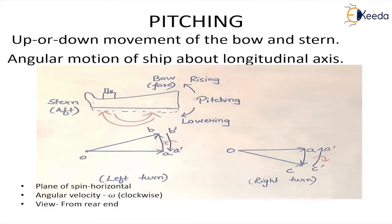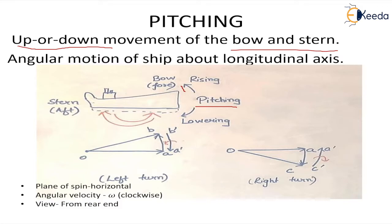Now pitching is the up or down movement of the bow — which is the front end — and stern, which is the rear end. In this diagram we can see pitching which is rising and lowering. It is a simultaneous motion: when the bow rises, the stern is lowered down; when the stern rises, the bow is lowered down.